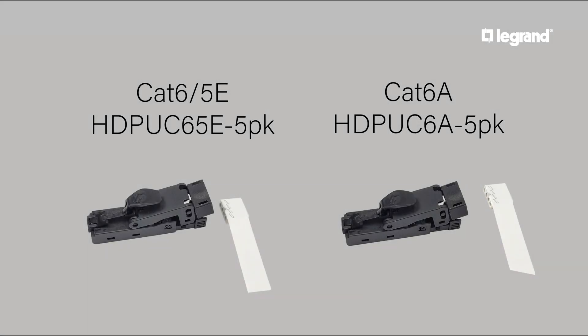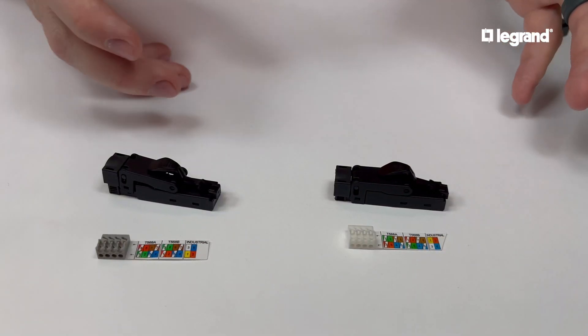Legrand carries two different categories of the unshielded field term plug: a Category 6 backward compatible with Category 5E, and a Category 6A plug. The installation steps are the same for both, so in this video we're using the Category 6 slash 5E plug.